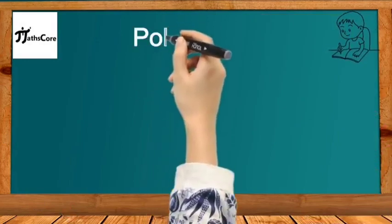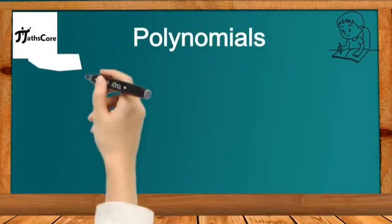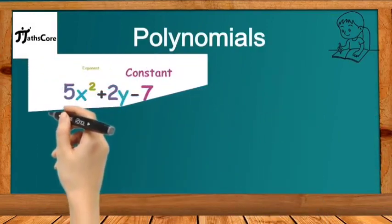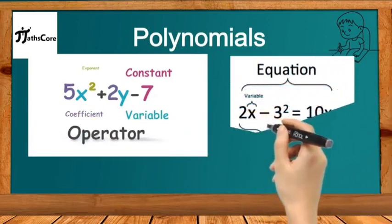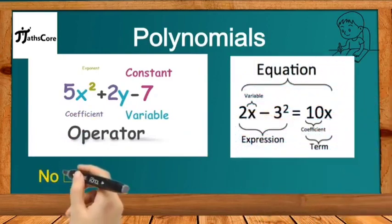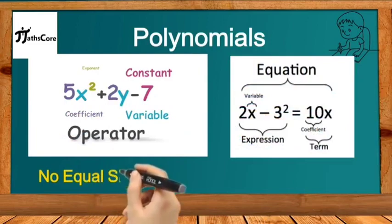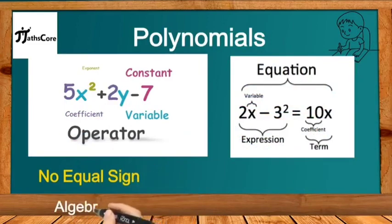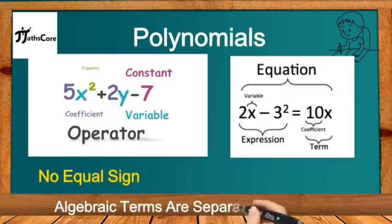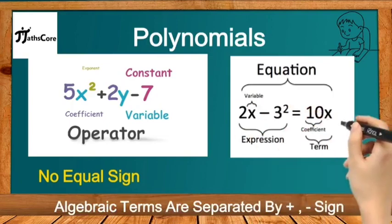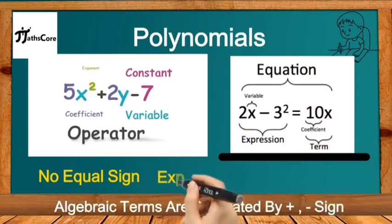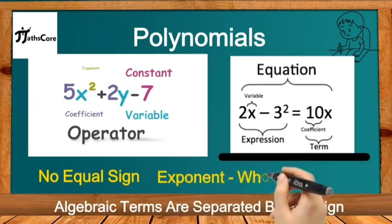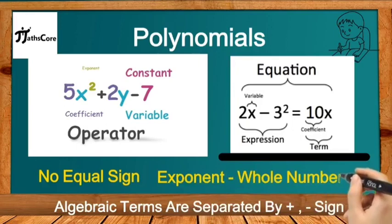First, let us know about polynomials. A polynomial is nothing but an algebraic expression. In a polynomial, algebraic terms are separated only by plus or minus signs, and the exponent is always a whole number. But in an equation, two algebraic expressions or terms are separated by an equal sign. That is the difference between an equation and a polynomial.